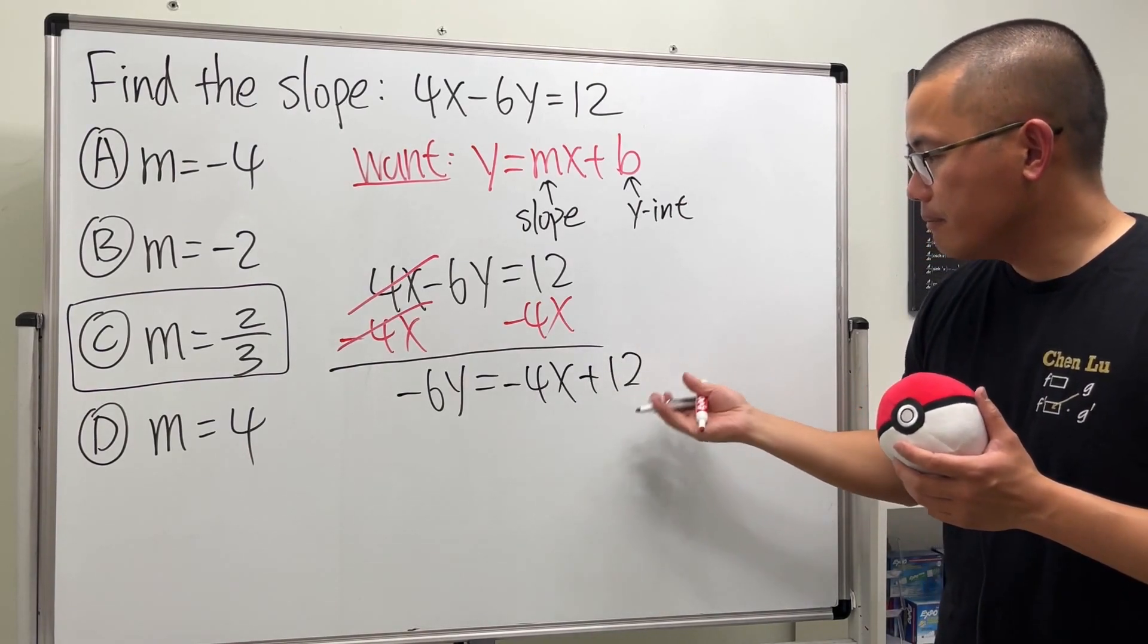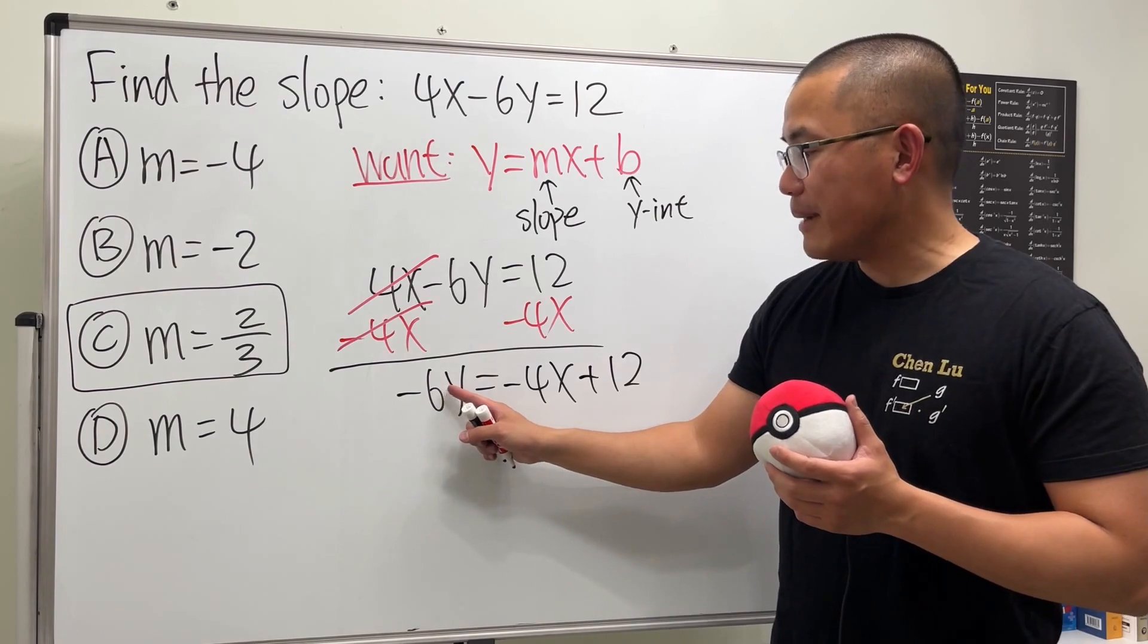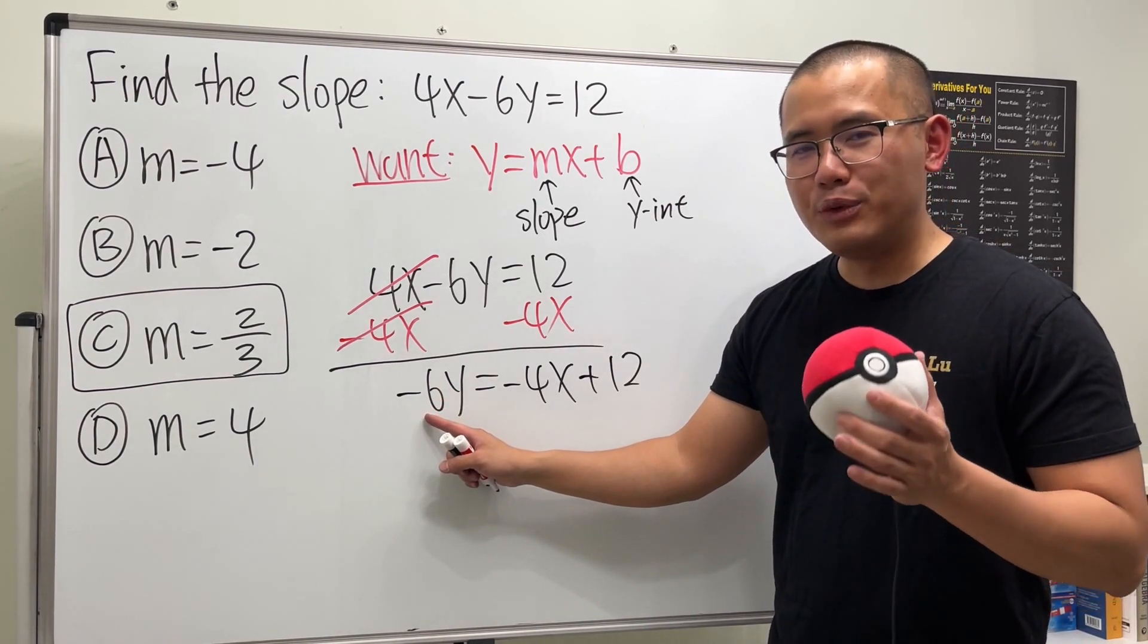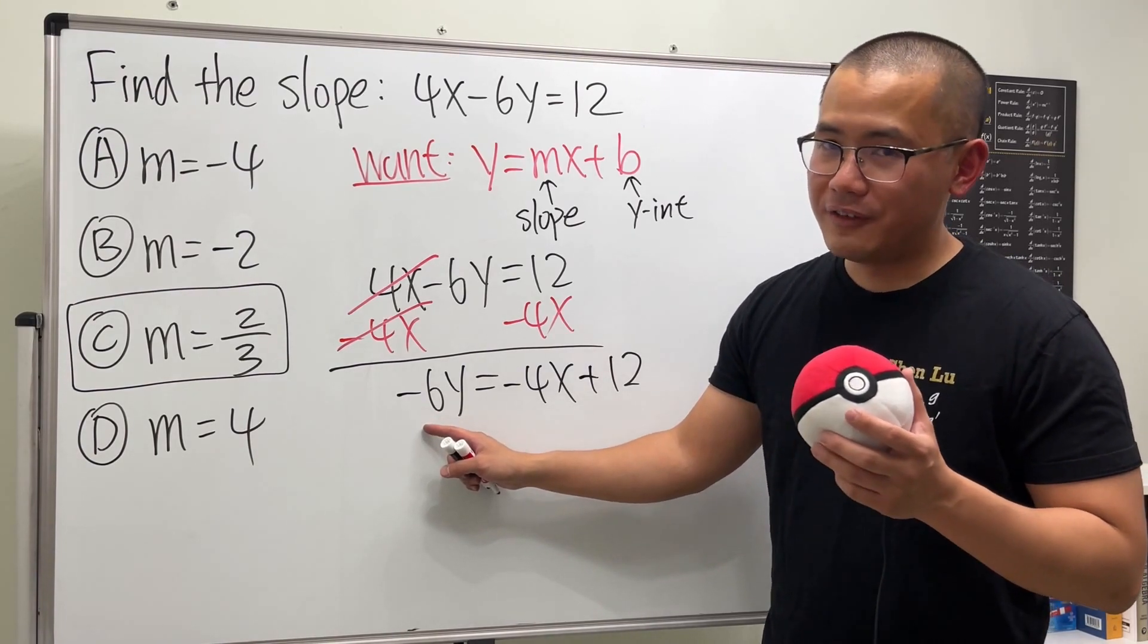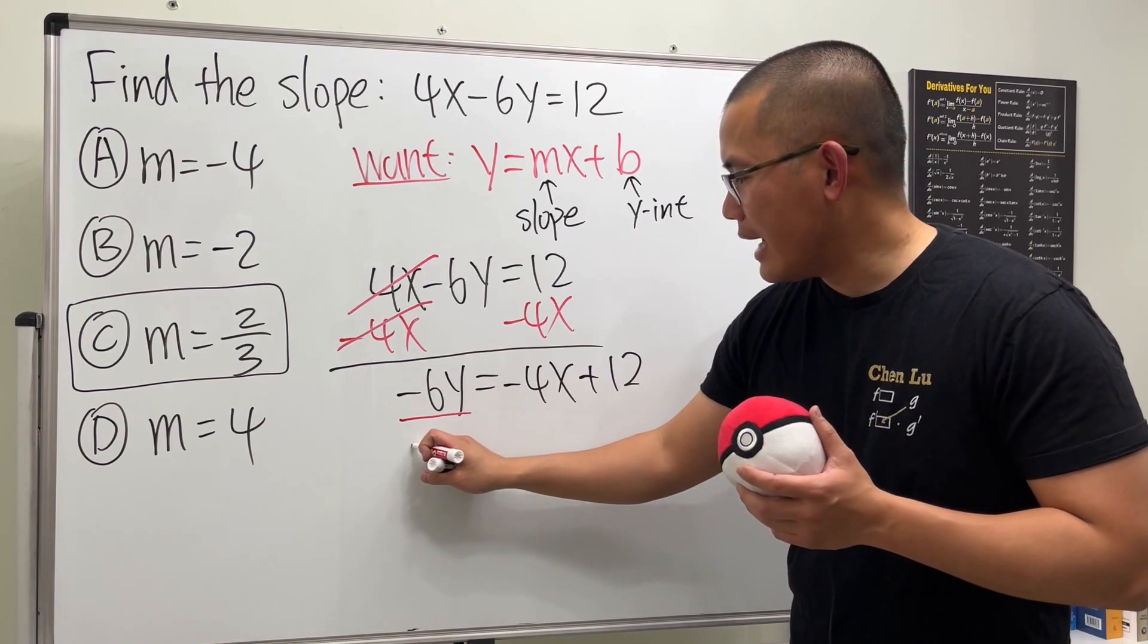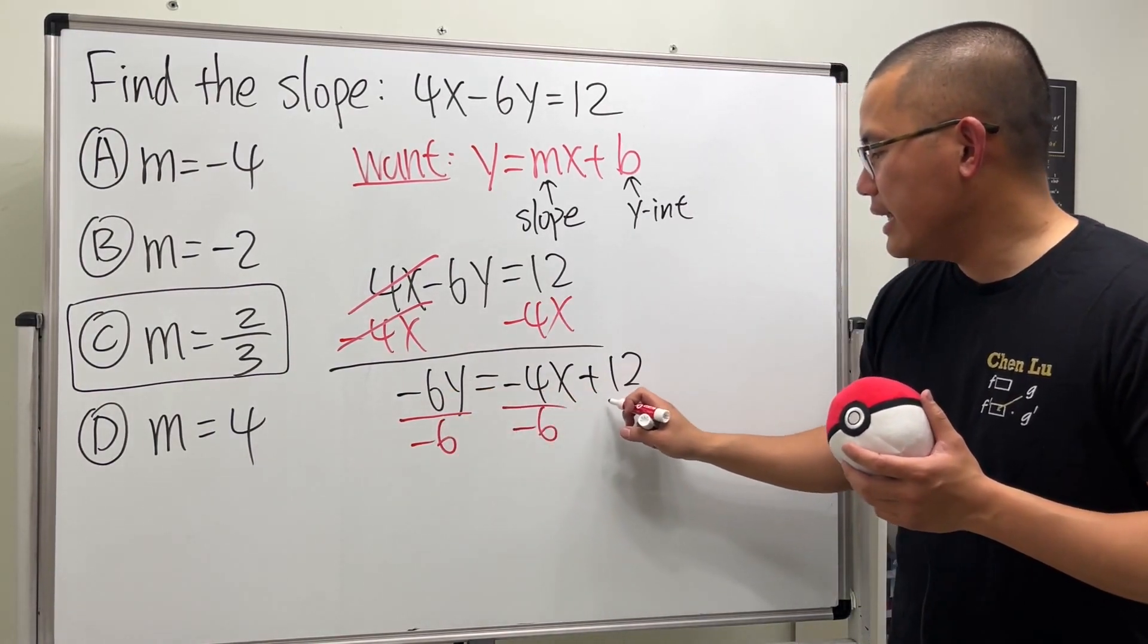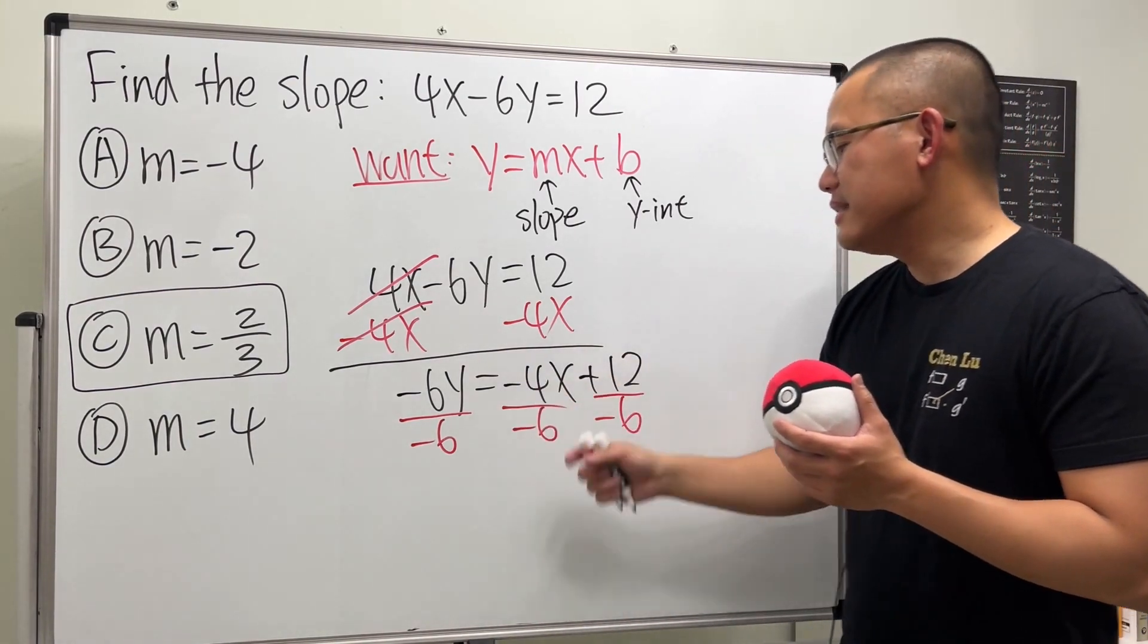Okay, this is negative 6 times y. We need to get rid of the y, we need to get rid of the negative 6. And to do that, we are going to divide everybody by negative 6. So divide negative 6 to everything.